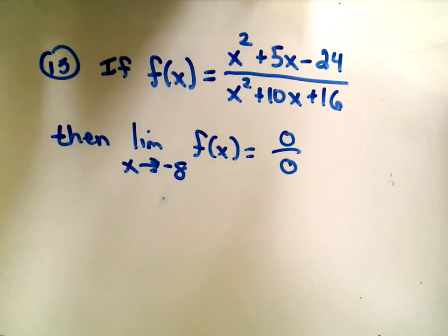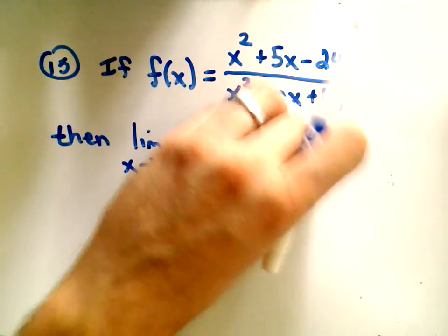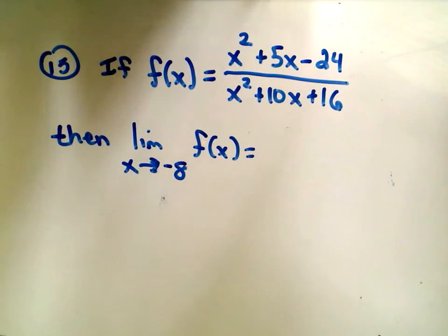There are two different ways that you could approach this problem. One thing would be to use L'Hopital's rule because we're getting 0 over 0. Another way would be simply to factor this.